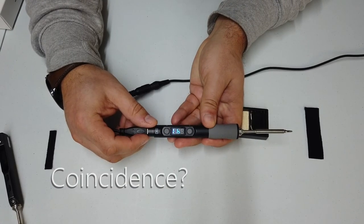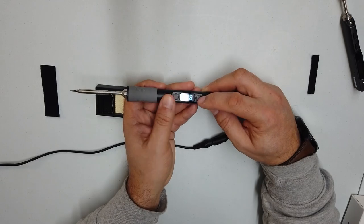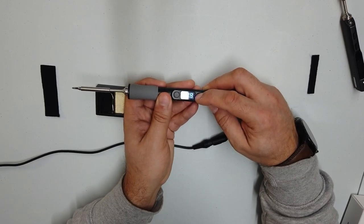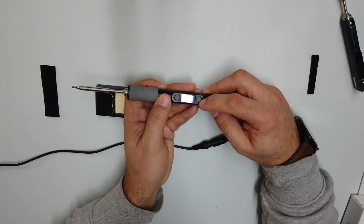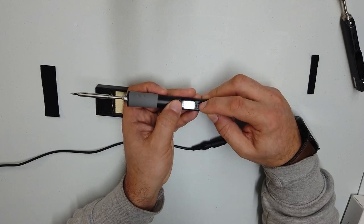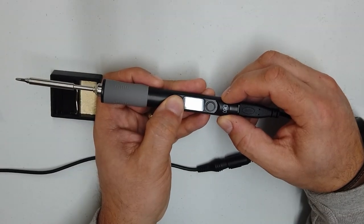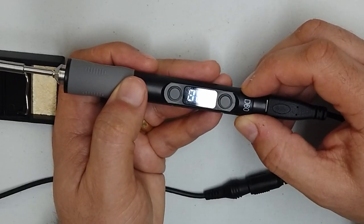So this has got an LED display on it. We can adjust the temperature. And I tend to run my iron at about 320, something along those lines. Let's press the A button and that should turn the iron on. And off she goes.